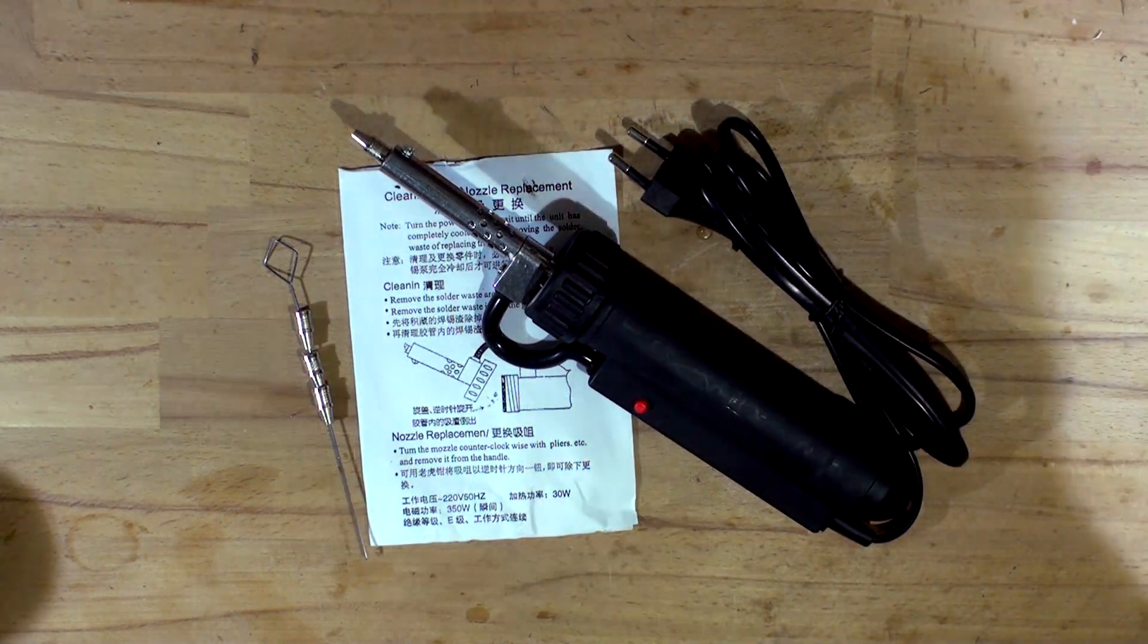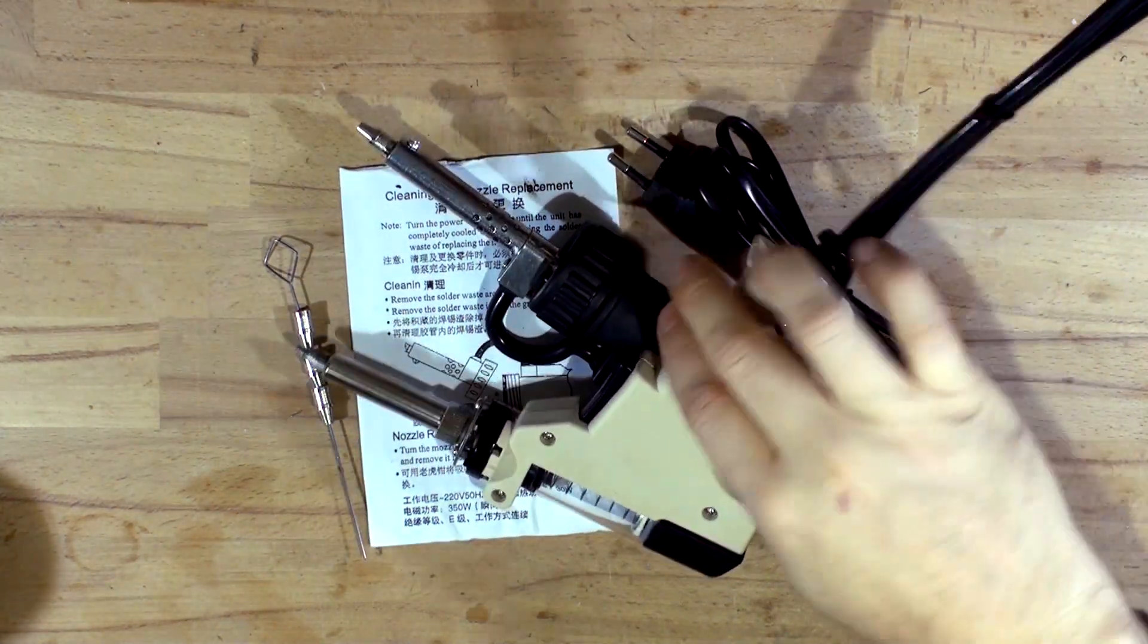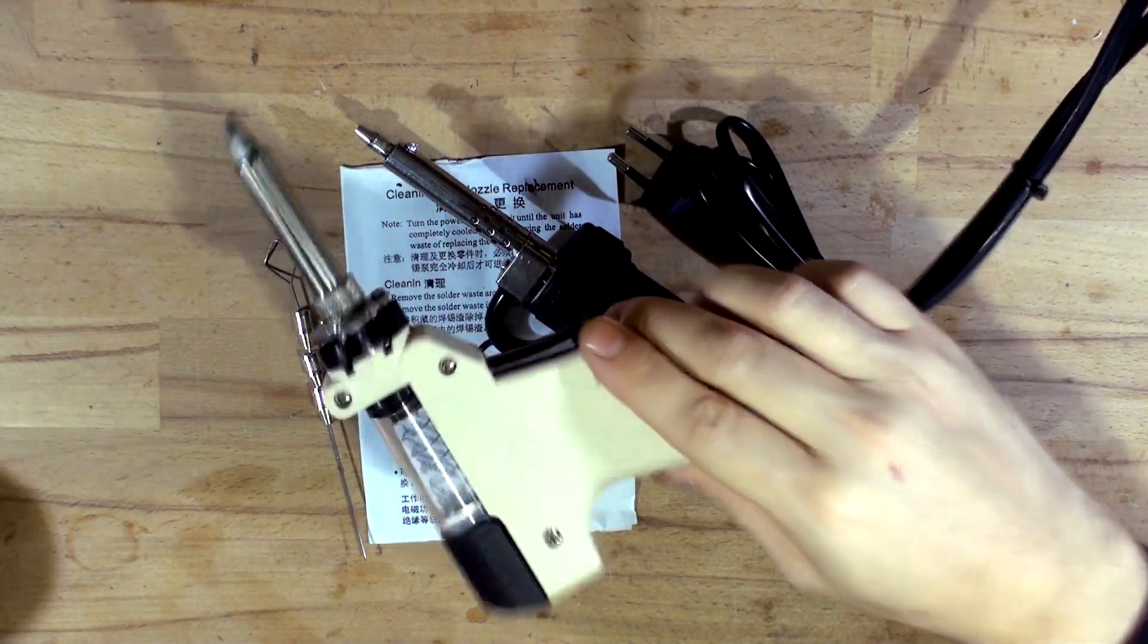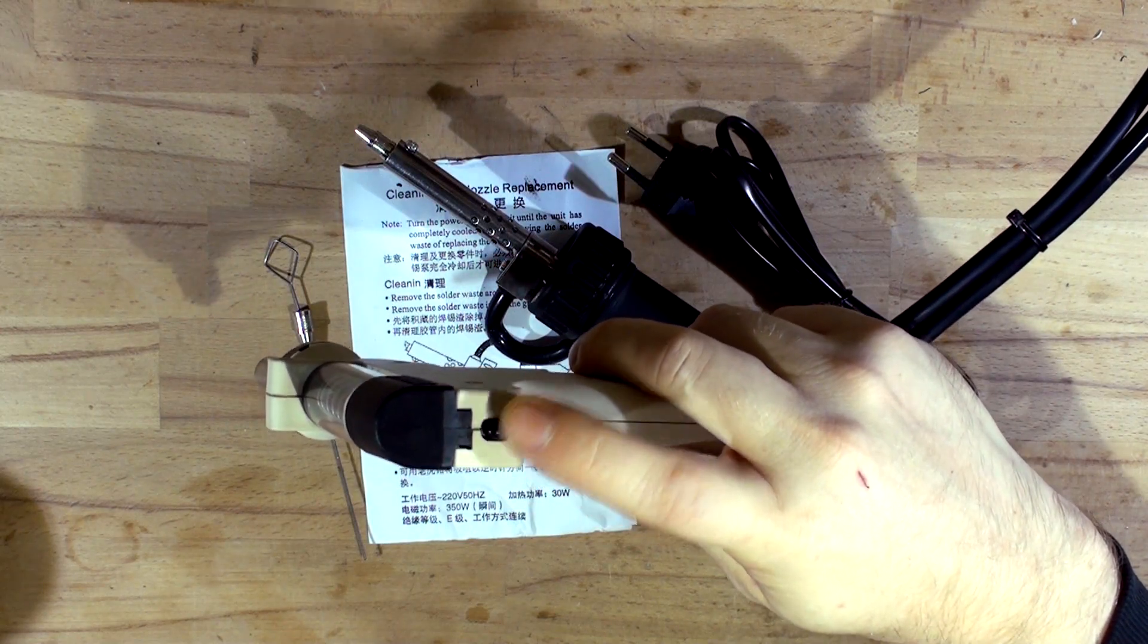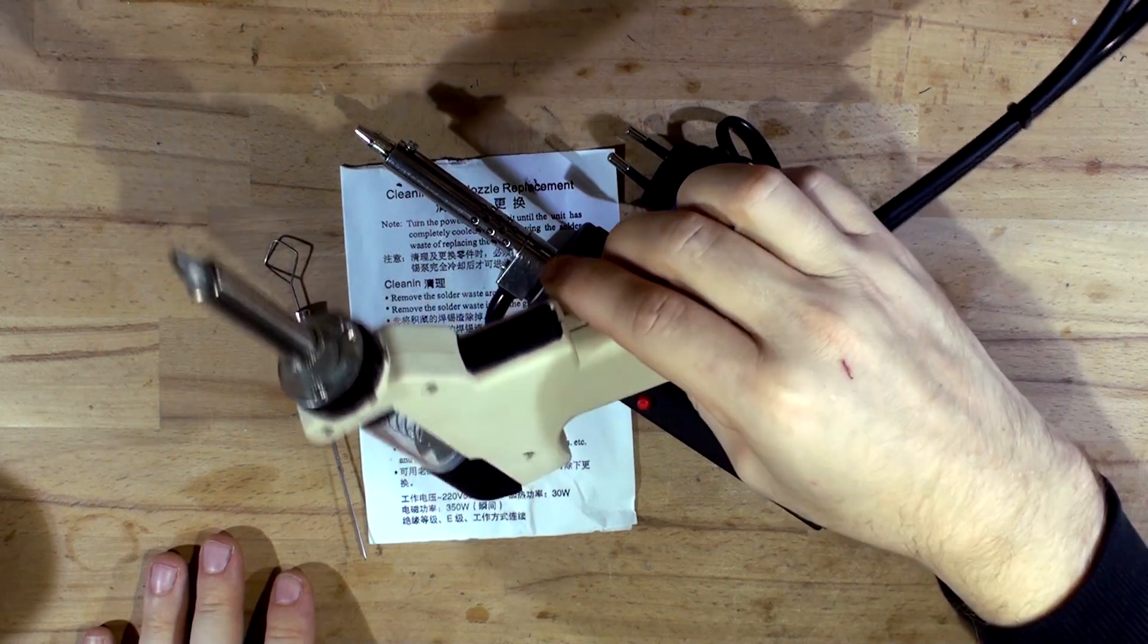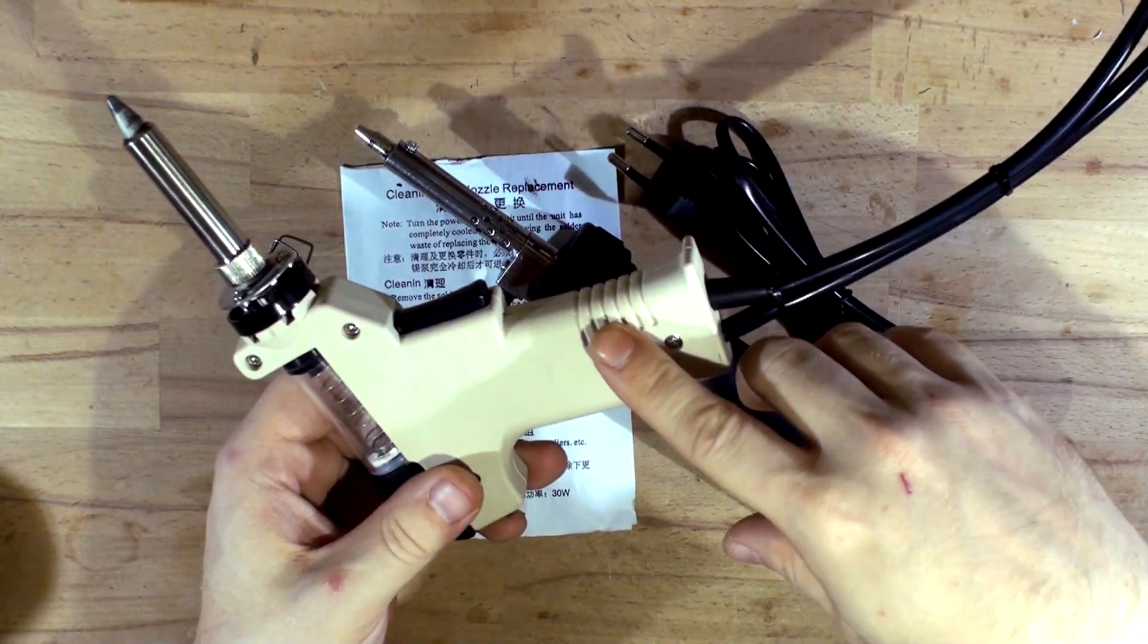At home in my lab I do have a proper desoldering pump, which is this vacuum one. But I had to buy another gun because that little thing broke, so it wasn't sealing the glass tube. So I bought a replacement gun and just redone it.